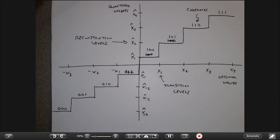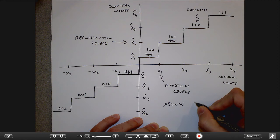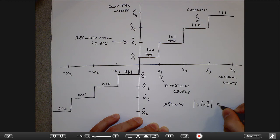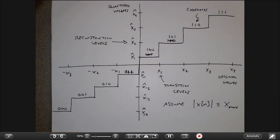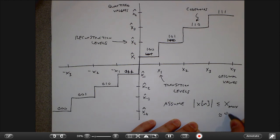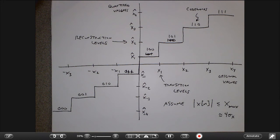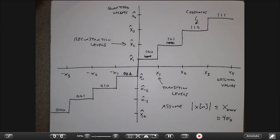These are the codewords, these we call the transition levels, and these we call the reconstruction levels. In this lecture I'm going to assume the original values are bounded — that's usually a good assumption for speech or images. We assume the original samples Xᵢ are bounded by some maximum value x_max. Even if I don't know exactly what that maximum is, I can observe the signal, compute its variance, and approximate x_max as maybe four times the standard deviation, which from probability captures 99-something percent of a normal distribution.